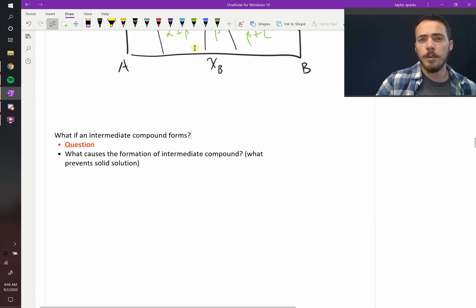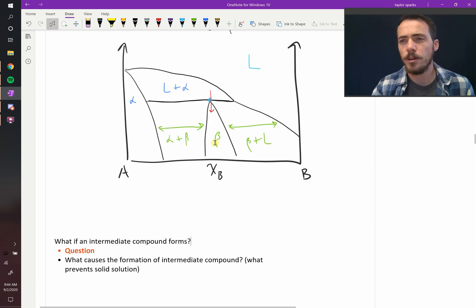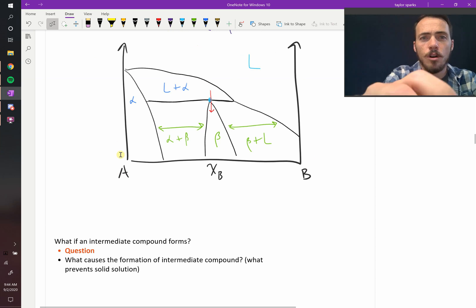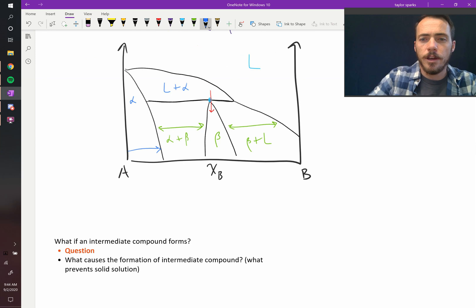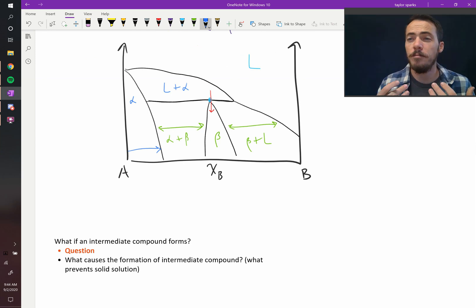Let's talk a little bit more about this intermediate compound that formed here. We started out with pure A, and we've got pure B. Pure A was allowed to dissolve some amount of B into A. All the way out into this line, we have solubility of B in A.